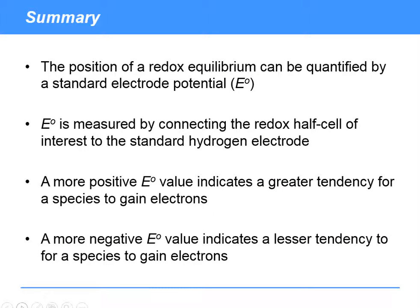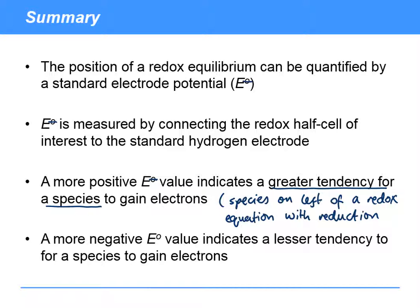To summarize, the position of a redox equilibrium can be quantified by a standard electrode potential, E standard. E standard is measured by connecting the redox half cell of interest to the standard hydrogen electrode, and a more positive E standard value indicates a greater tendency for a species to gain electrons, and that's the species on the left of a redox equation with reduction written as the forward reaction. And then the converse, a more negative E standard value indicates a lesser tendency for a species to gain electrons.